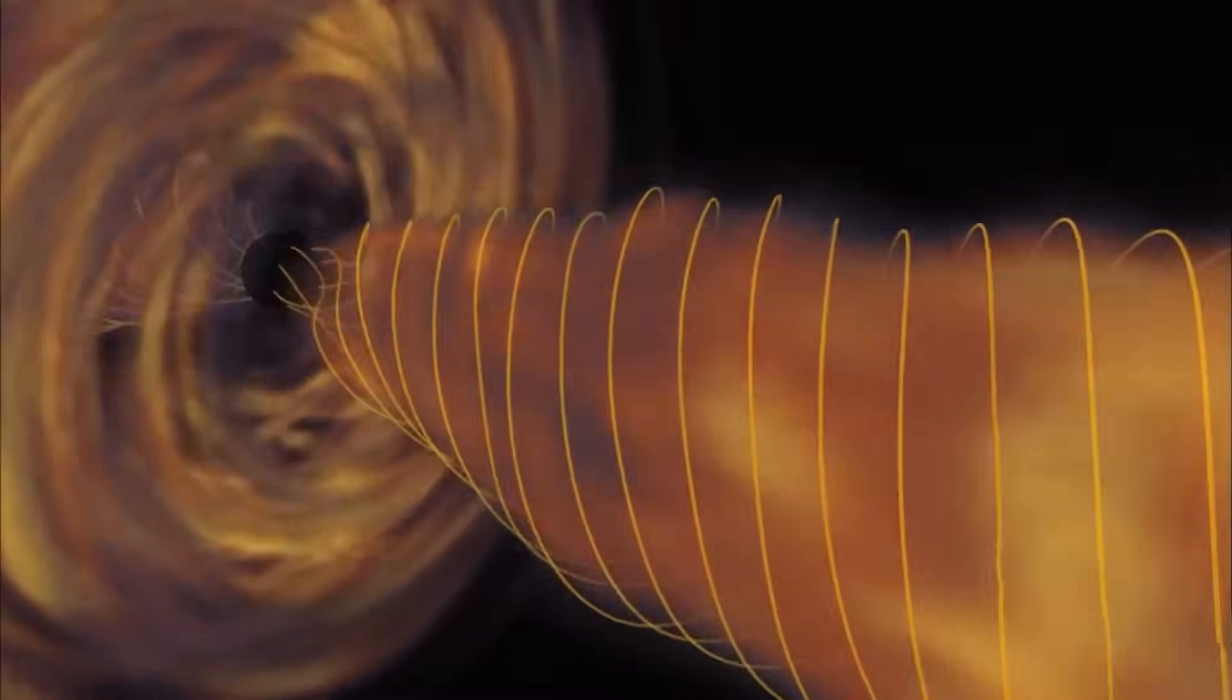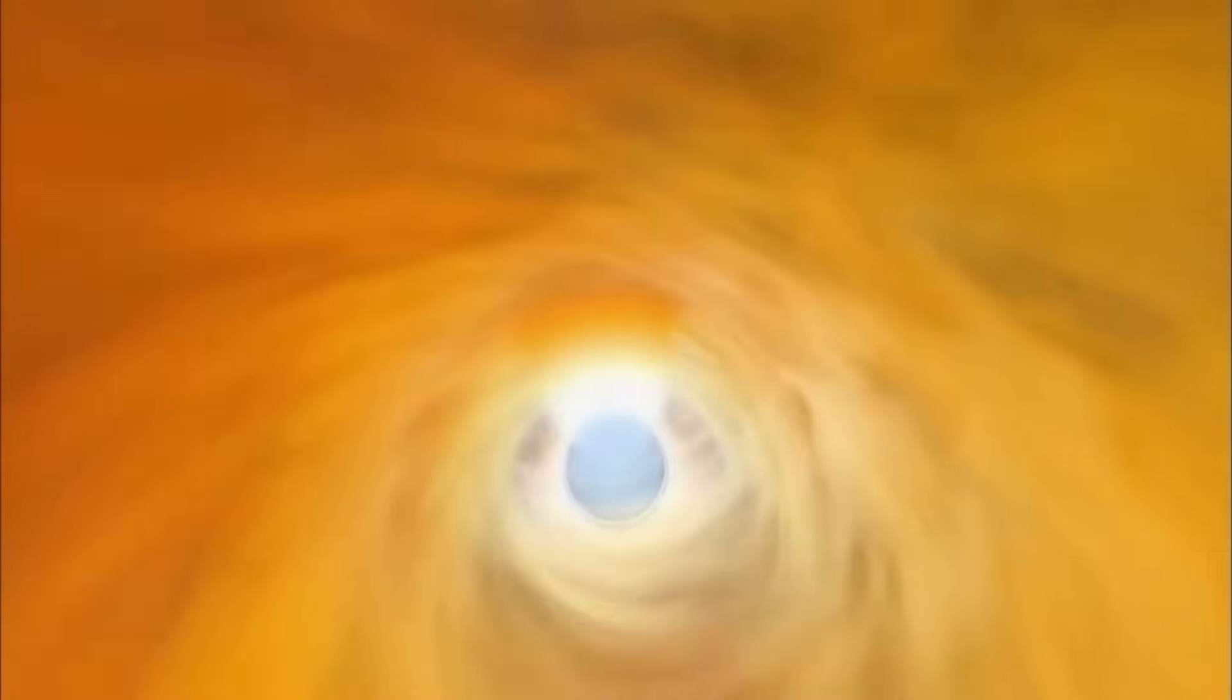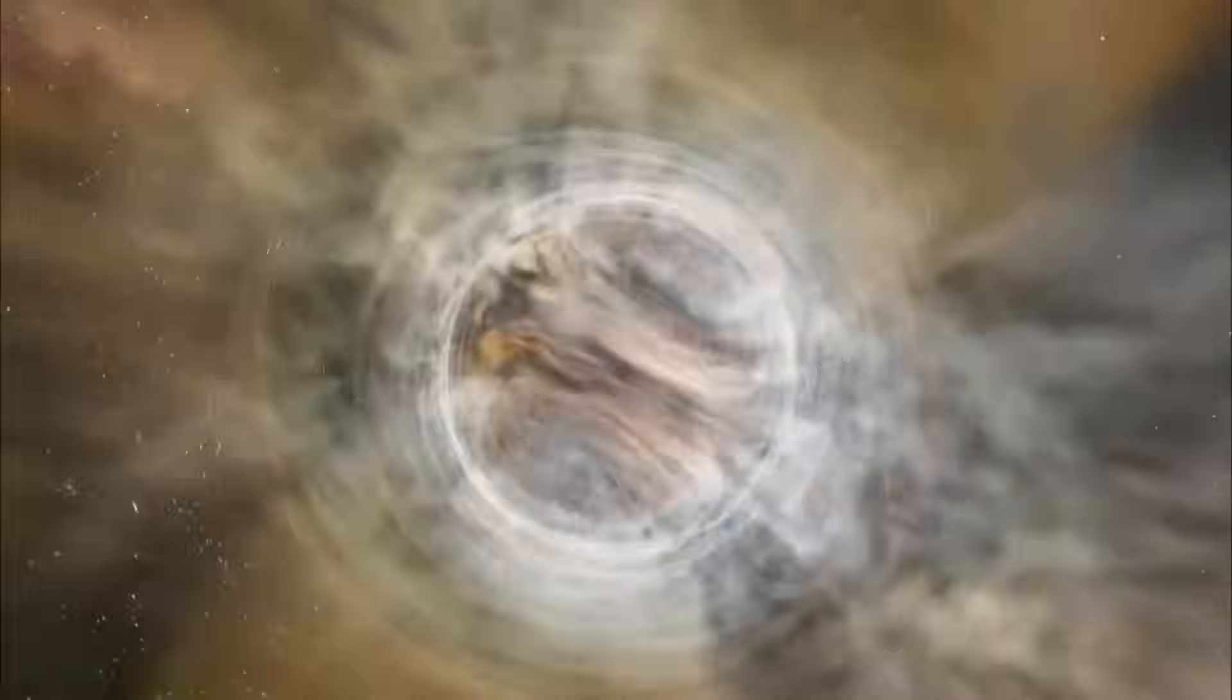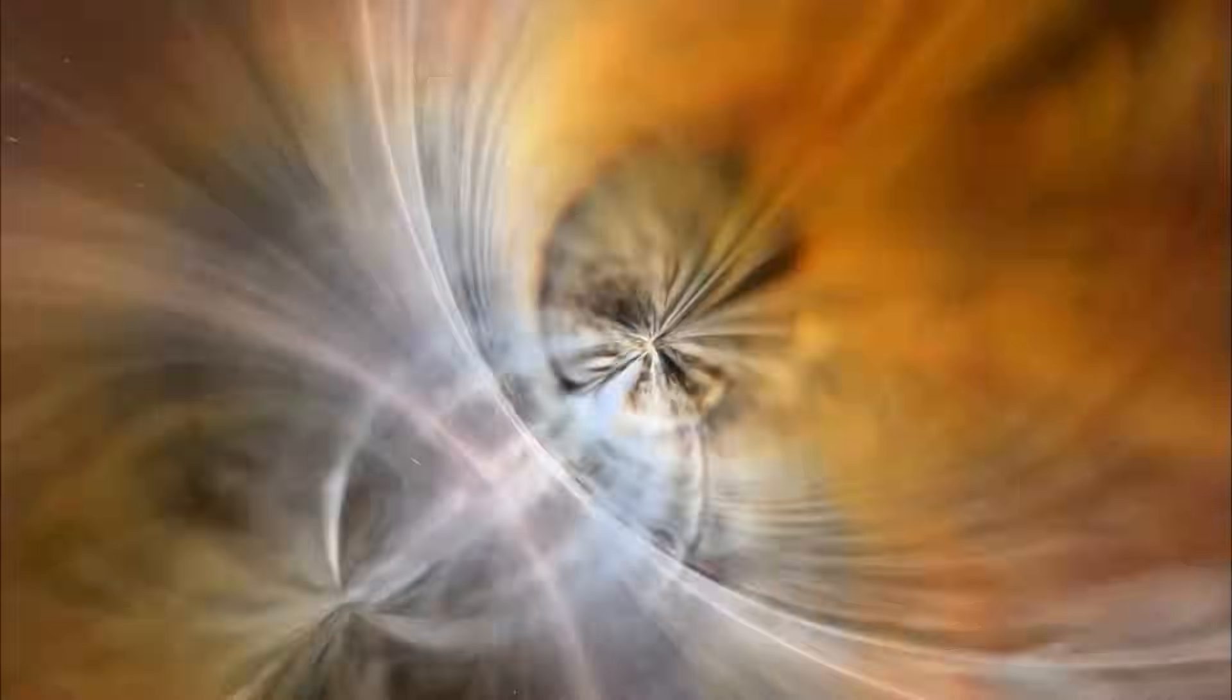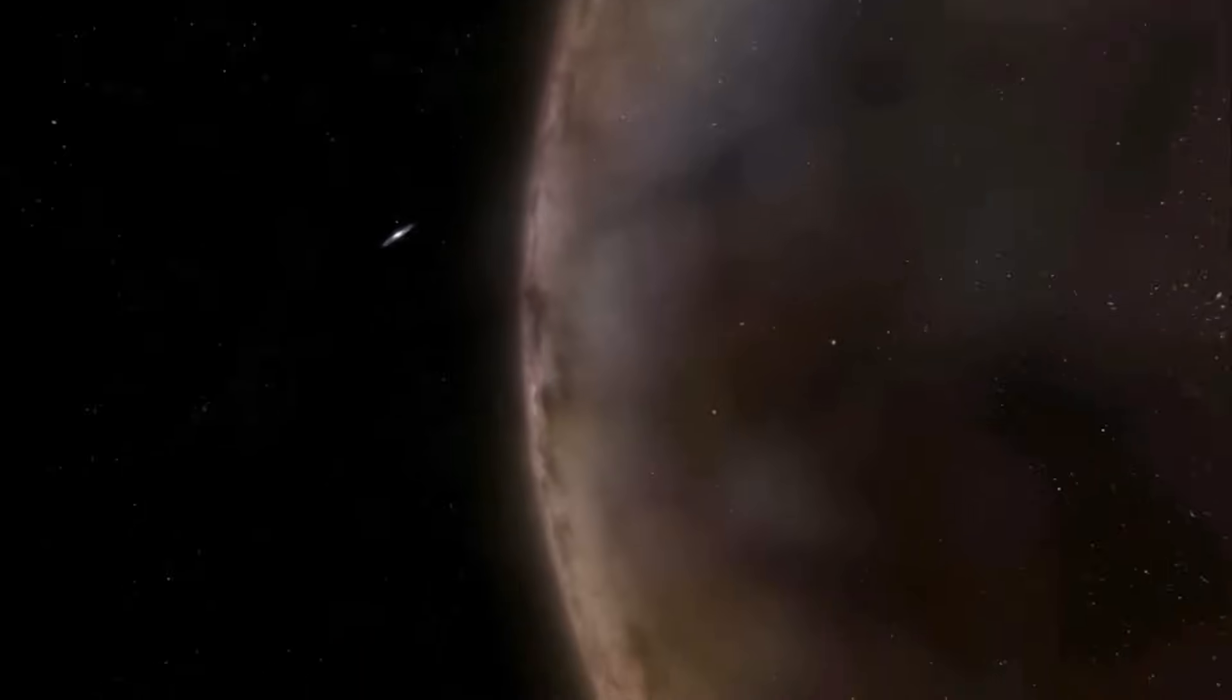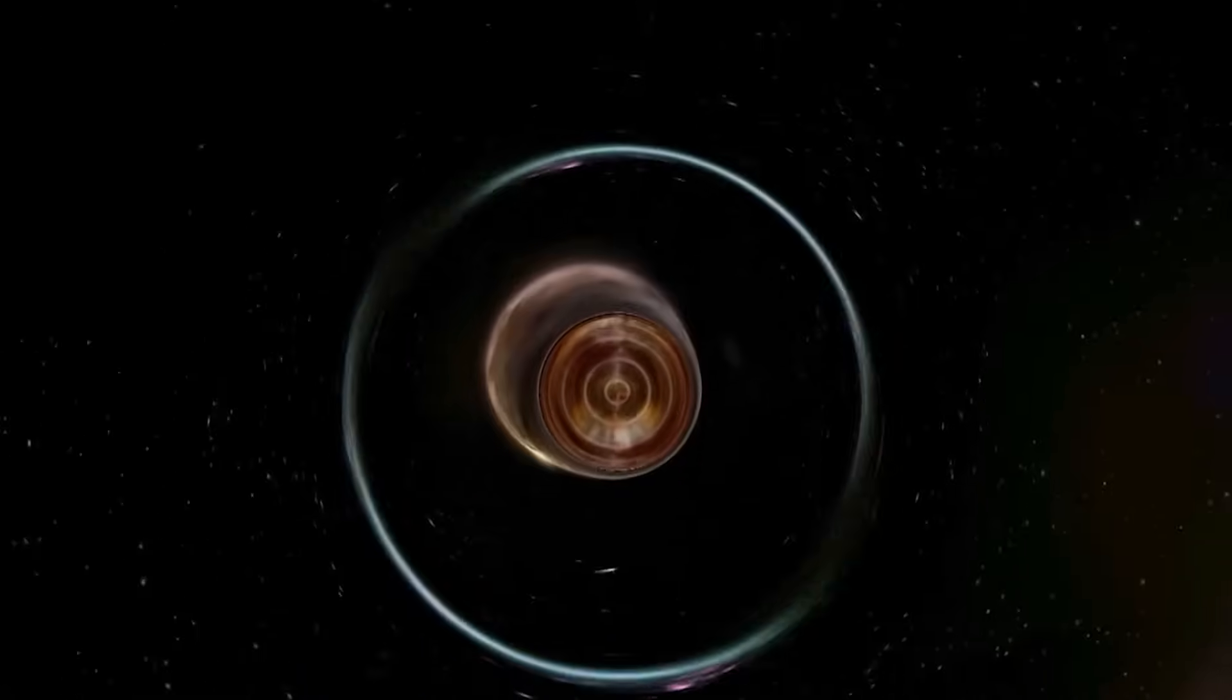Now, this is where things become truly extraordinary. The gravitational pull of a black hole is so incredibly strong that it creates what is known as an event horizon. The event horizon is not a physical barrier, but rather a region where space gradually bends. It is an invisible boundary or point of no return. Once something, such as an unfortunate spacecraft or even light, crosses this boundary, it can never escape the clutches of the black hole.